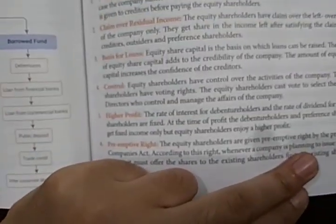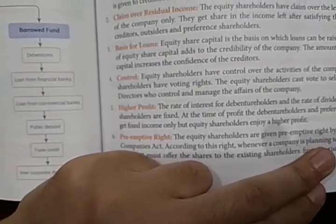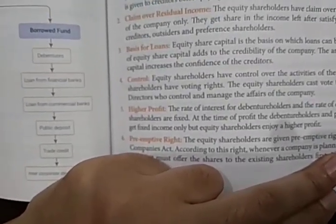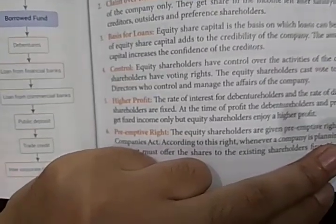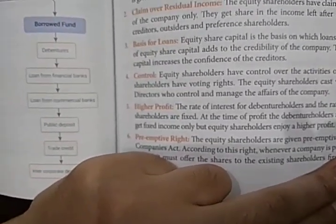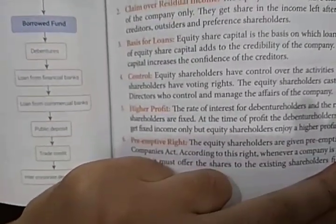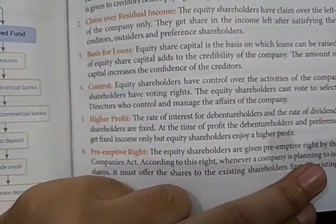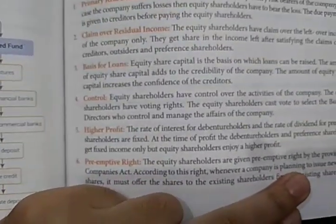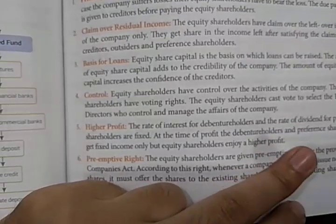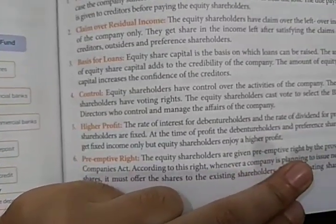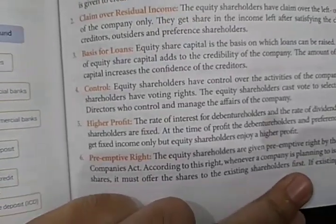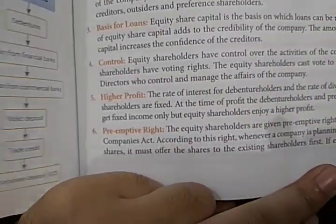Next is higher profit. If the business is earning higher profit, preference shareholders and debenture holders receive a fixed rate of interest. But after paying them, all remaining profit goes to equity shareholders. Unlike debenture holders and preference shareholders who get a fixed rate, equity shareholders can earn much higher profits.